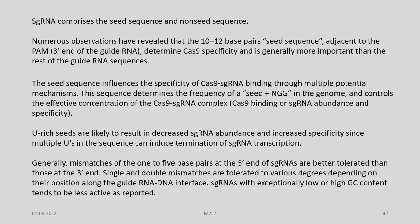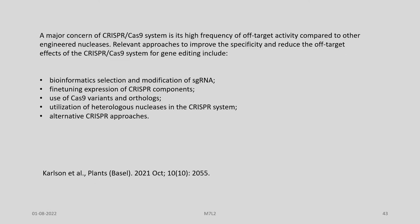General mismatches of 1 to 5 base pairs at the 5′ end of the single guide RNA are better tolerated than those at the 3′ end. Single and double mismatches are tolerated to various degrees depending on their position along the guide RNA-DNA interface. RNAs with exceptionally low or high GC content tend to be less active, as reported by many researchers.